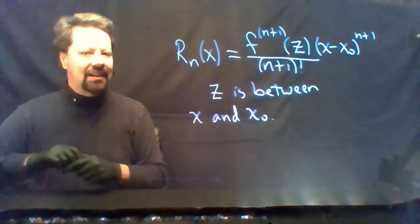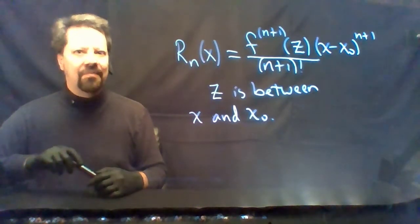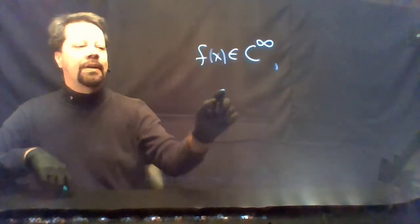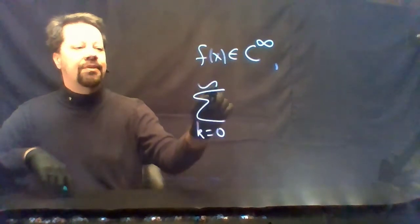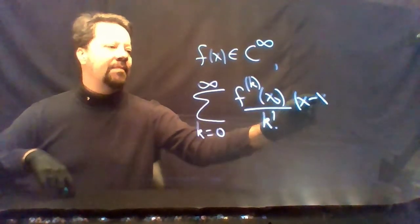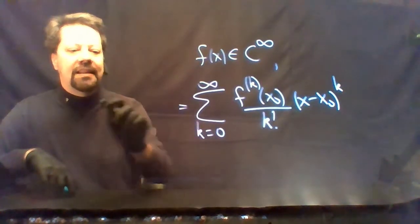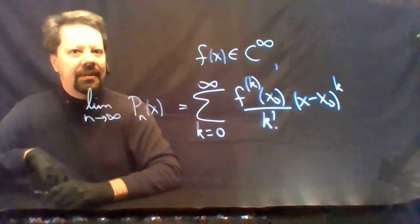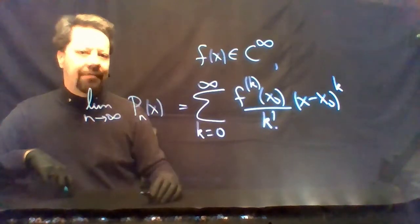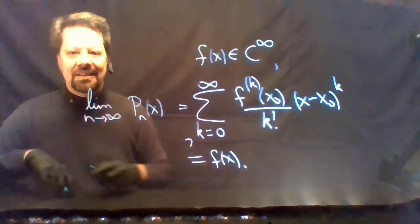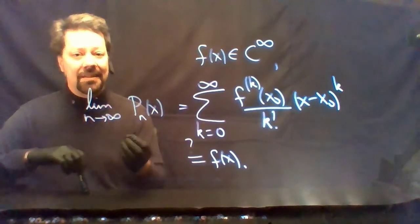The theorem did not tell exactly where z is — it only guaranteed the existence of z. What we're going to do today is look at what happens given some function f that is infinitely differentiable. We're going to look at the sum as k goes from zero to infinity of the kth derivative at x₀ divided by k factorial, times x minus x₀ to the power k. This is the limit as n goes to infinity of the nth order Taylor polynomial. Does this converge to the original function f of x? The answer is sometimes yes, sometimes no.